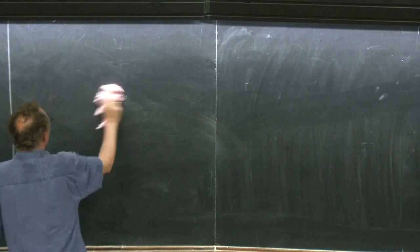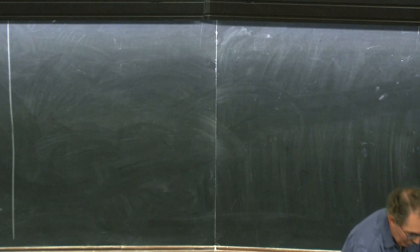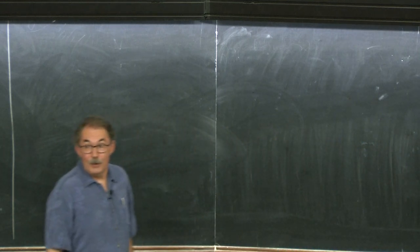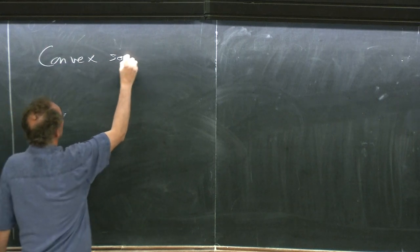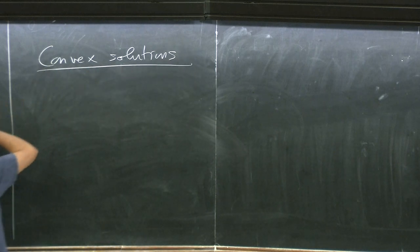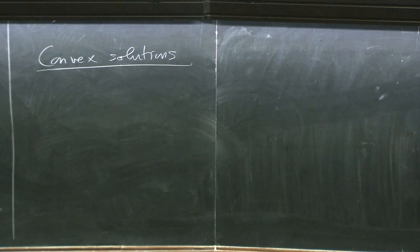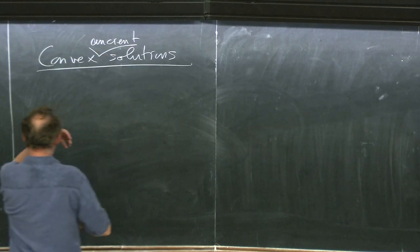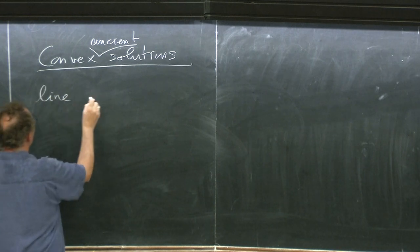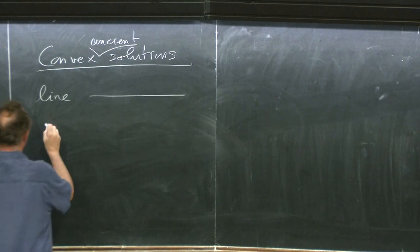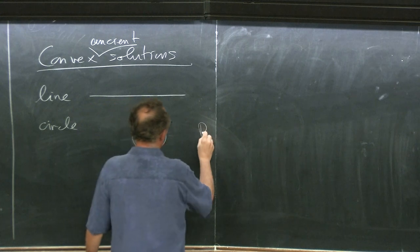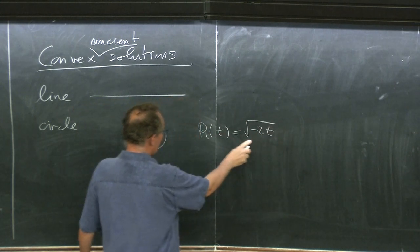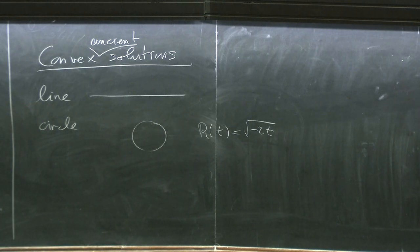Convex mean curvature flow and the study of ancient solutions is, as I want to show in a couple of minutes, just a very natural mathematical question. Let me begin with what is known. For convex ancient solutions: there is the line, that's the minimal surface, it sits still. There's the circle, with radius square root of minus 2t — notice this radius is the same as the radius of the cylinder, because the cylinder is just that circle crossed with a line.